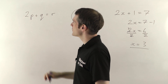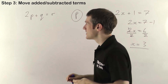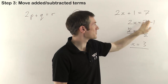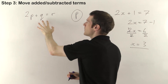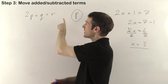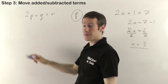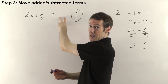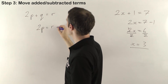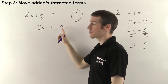We want the p by itself. Step one: remove fractions — none. Step two: remove brackets — none. Step three: move added and subtracted terms. We want all the p's on one side and everything else that's been added or subtracted moved across to the other side. The r's and q's we want over on the right; the p and anything next to it we leave on the left. So move the plus q over — change sides, change signs — it becomes a minus q. We get 2p equals r minus q. Just like the plus 1 moved over and became a minus 1, the plus q moves over and becomes a minus q.